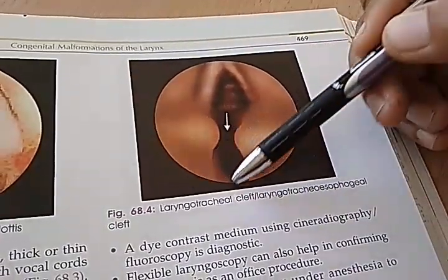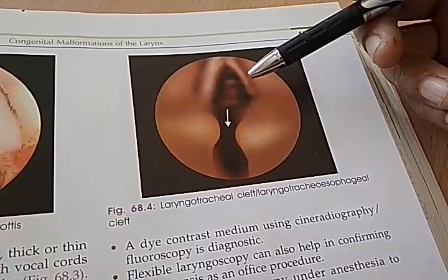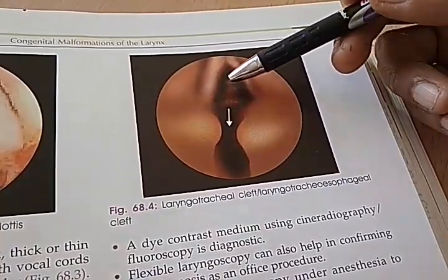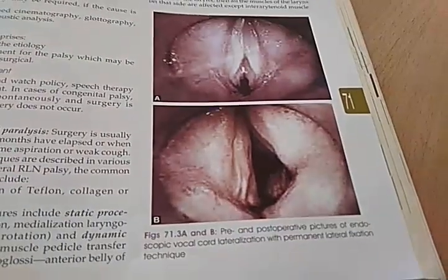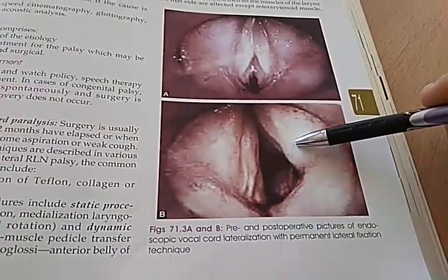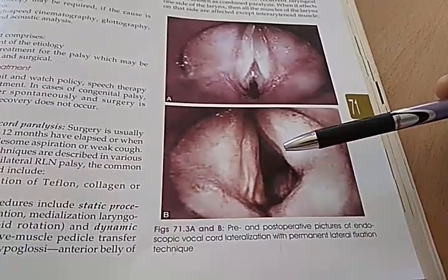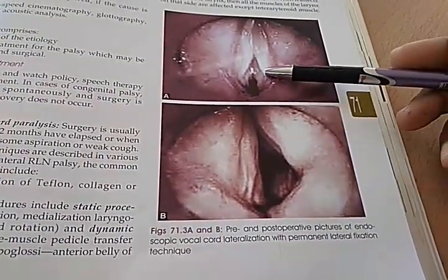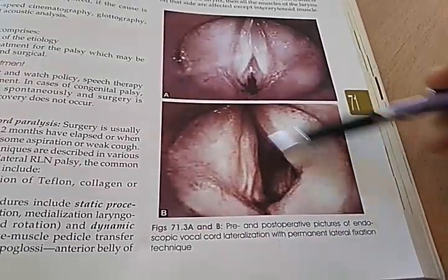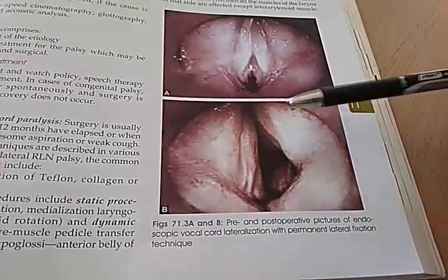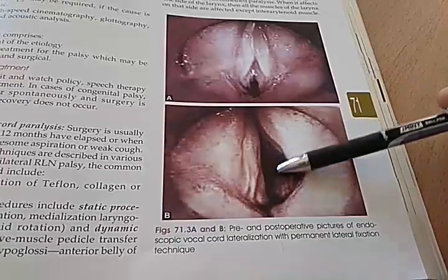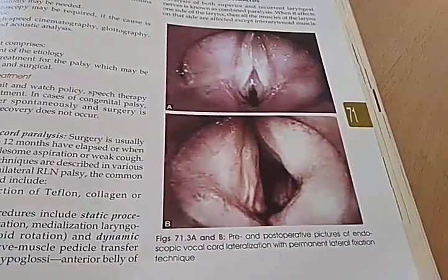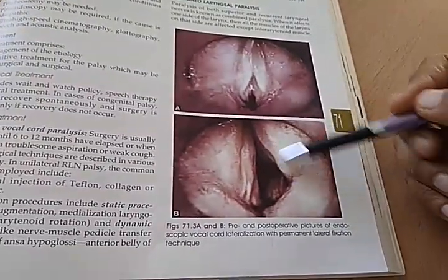This is also nice — they are showing a laryngotracheal cleft, also laryngotracheal trauma. Pre- and post-operative pictures of endoscopic vocal lateralization with permanent lateral fixation technique. The vocal cords are lateralized — this person won't be able to talk much but can breathe nicely. Looks like they have lateralized only on one side.